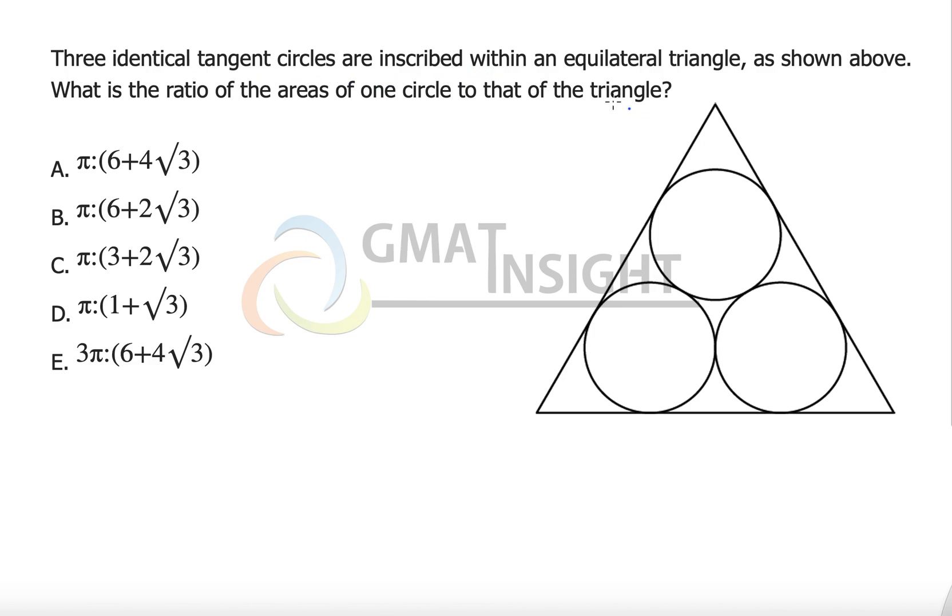Three identical tangent circles are inscribed within an equilateral triangle as shown above. What is the ratio of areas of one circle to that of the triangle? The problem is just to find out the ratio of the side and the radius, and then we can answer the question because we know the area of an equilateral triangle is root 3 by 4 of side squared and area of a circle is pi r squared.